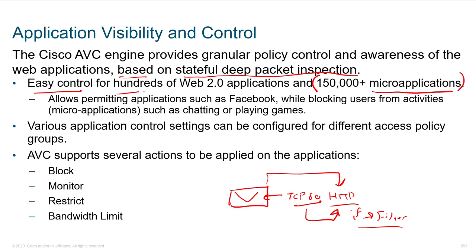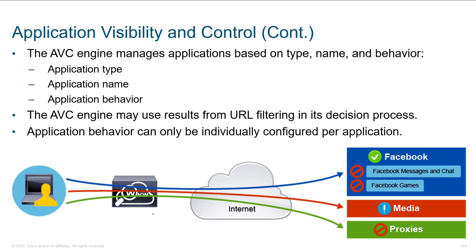AVC provides easy control for hundreds of web 2.0 applications where users are pushing content to the internet. This allows permitting applications like Facebook while blocking user activities or micro-applications within it, like chatting or playing games. Different applications will have different micro-application support, and it's growing all the time with more capabilities being added. As you do signature updates, you can look forward to more support and visibility. Once we identify something we like or don't like, we can block it, monitor it, restrict it, or apply bandwidth limitations.